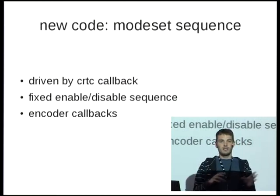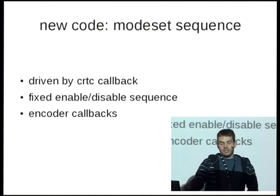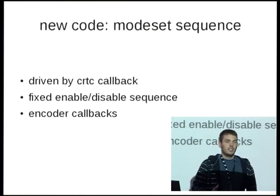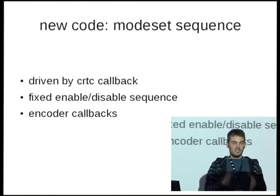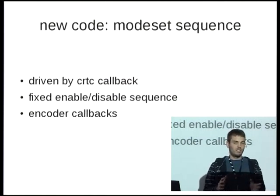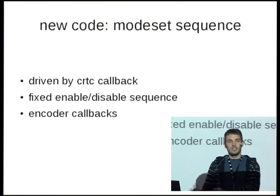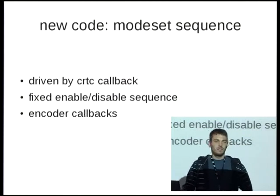We now have a fixed enable-disable sequence. We don't do a little bit of encoder disabling, then a little bit of CRTC disabling, and a few things in between. If we decide to disable a pipe, we disable the entire pipe including all connectors and encoders — no matter what the state change is — and then set up the new configuration completely fresh. We have quite a few more encoder callbacks and will probably grow more.